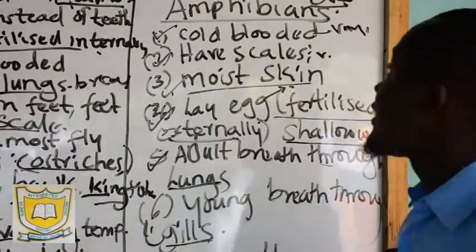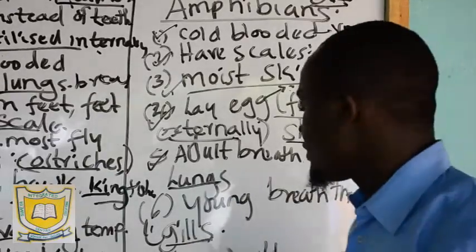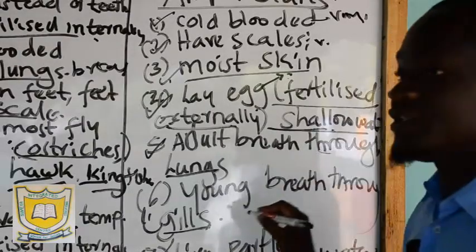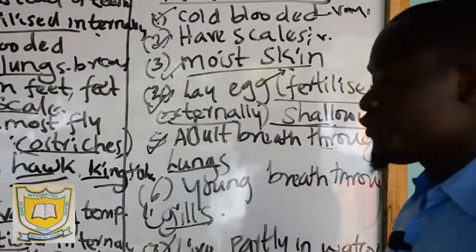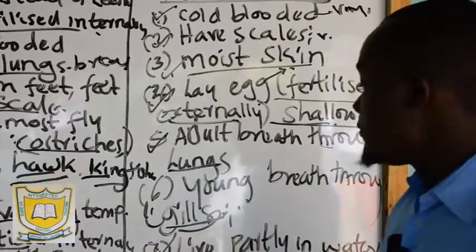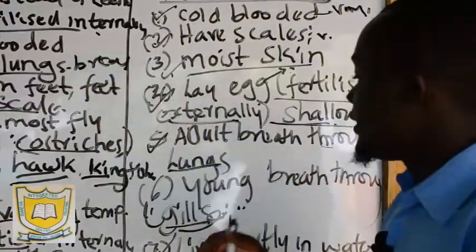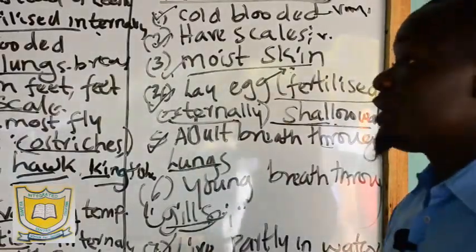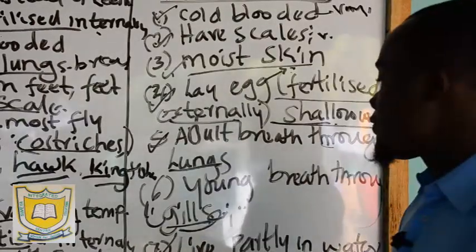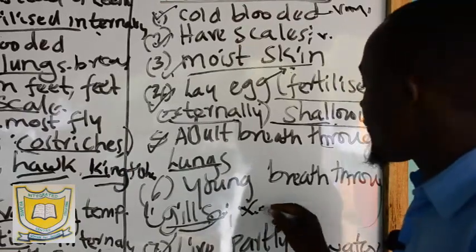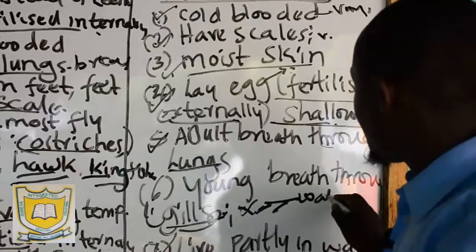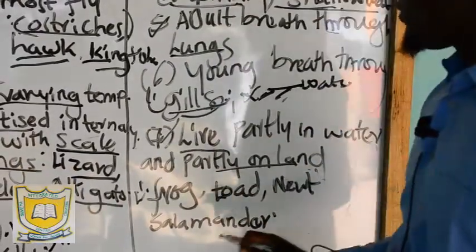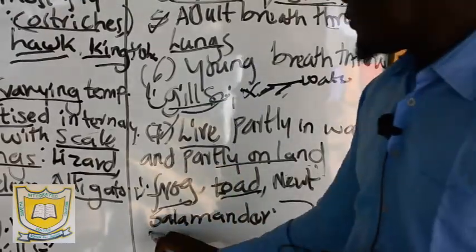Amphibians live partly in water and partly on land. They live in water at their young stages because they carry out gaseous exchange using gills, and gills cannot work outside of water. Water moves into the buccal cavity with oxygen; when the water exits, the oxygen is taken by the amphibian and carbon dioxide is expelled. Examples of amphibians are frog, toad, newt, and salamander.